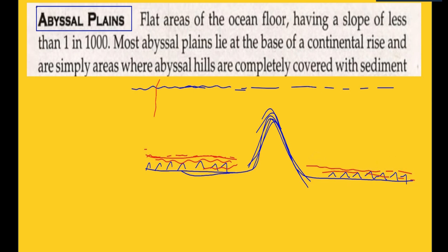In some regions, hills will be visible; in some regions, they will not be visible when covered. This flat surface is what we call an abyssal plain.